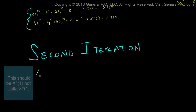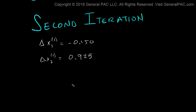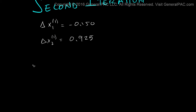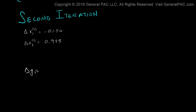In the second iteration we already know that delta x1 of iteration 1 equals negative 0.150, and delta x2 for the second iteration equals 0.925. Now let's calculate our mismatch. The mismatch is delta g1 for the second iteration, which equals b1 minus h1 for the second iteration.